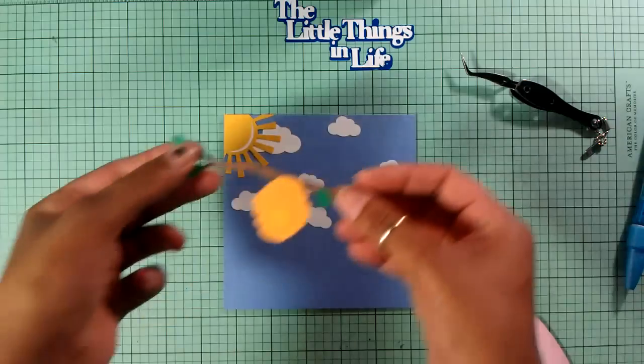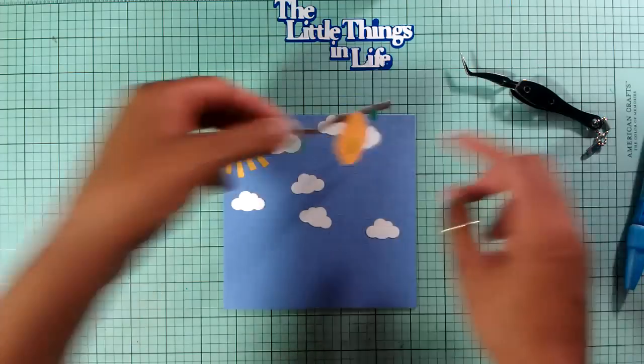I got these clouds and I just want to randomly put them around. I also want to see where I'm going to put my other cut set. I have this tree branch which is part of her set. That looks really good right there. I'm just going to adhere these clouds in the spots that I laid them at, just to try to keep it uniformed.